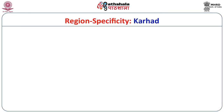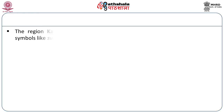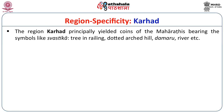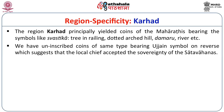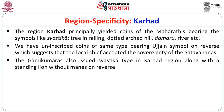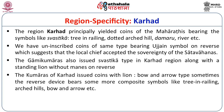Another important locality is Karhad. The region principally yielded coins of the Maharatis bearing symbols like swastika, tree in railing, dotted arched hill, damaru, and river. Uninscribed coins of the same type bearing the Ujjain symbol on the reverse suggest that the local chief accepted the sovereignty of the Satavahanas. The Gami Kumars also issued swastika type coins in Karhad along with a standing lion without manes on the reverse. The Kumaras of Karhad issued coins with lion and bow-and-arrow on the reverse, sometimes combined with more composite symbols like tree in railing, arched hills, and bow and arrow.